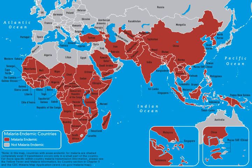Race and health refers to how being identified with a specific race influences health. Race is a complex concept that changes across time and space and depends on both self-identification and social recognition. In the study of race and health, scientists organize people in racial categories depending on different factors such as phenotype, ancestry, social identity, genetic makeup, and lived experience.